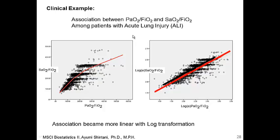This is a clinical example. Many variables in biology are often log-normally distributed, meaning after log transformation the distribution becomes normal. For example, the association between the SAO2/FiO2 ratio and PAO2/FiO2 ratio is approximately linear in log scale, but after anti-logging both SAFI and PAFI it becomes nonlinear.